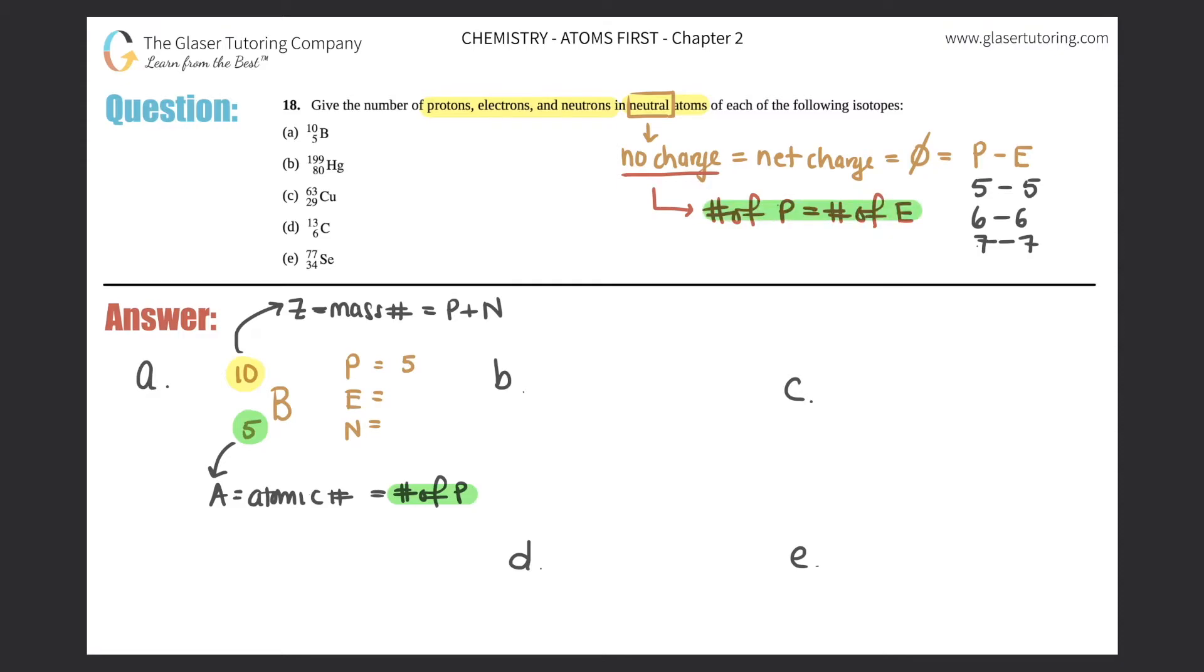So what does no charge tell us? A neutral atom or an atom with no charge, the number of protons has to equal the number of electrons every single time. So in these, they're all neutral, which means that if we have five protons, we will have five electrons. Now we got to figure out how many neutrons there are. Well, we can find out how many neutrons there are by dealing with the Z and the A number. You can always subtract these two to find out how many neutrons there are. So I'll put that up top here.